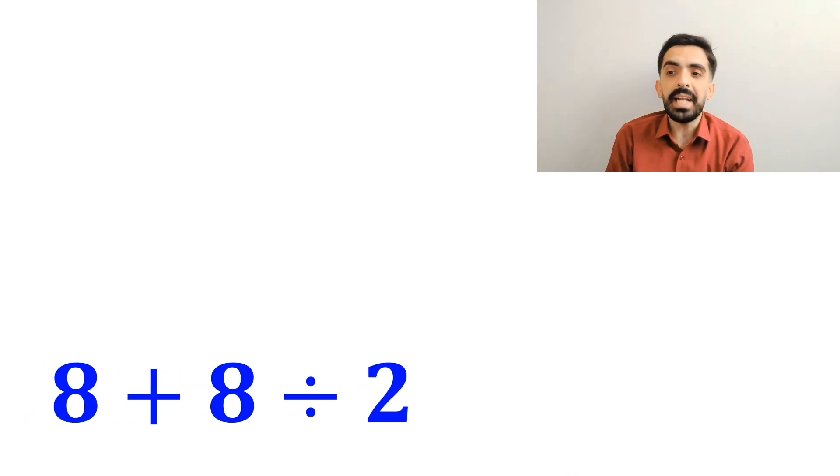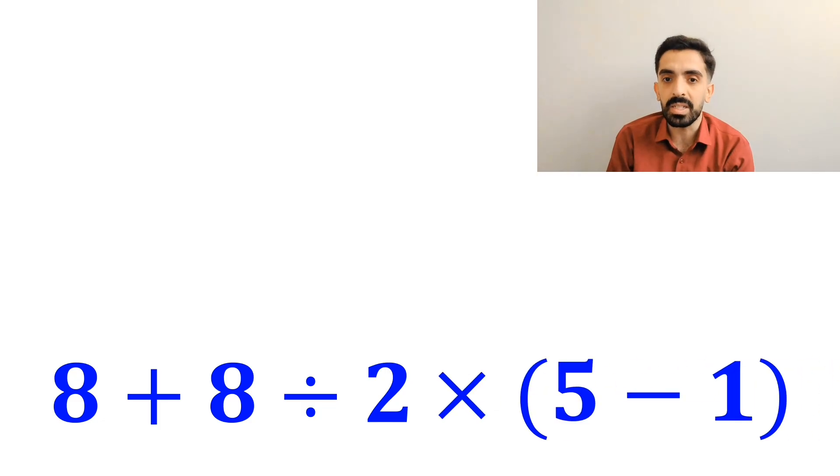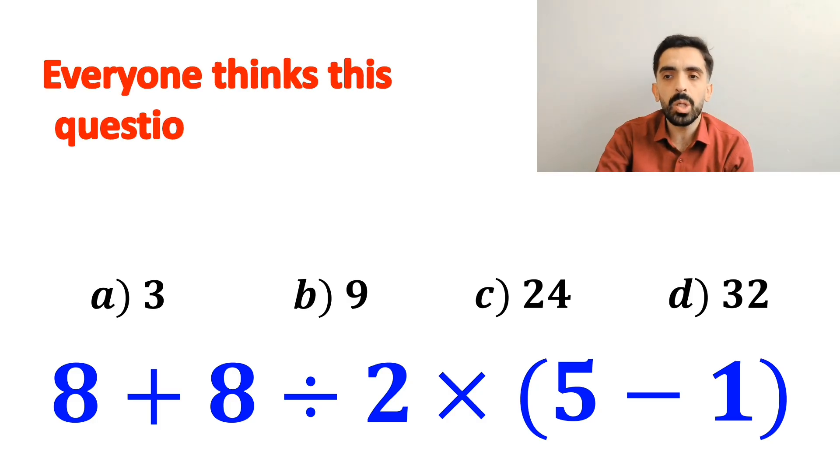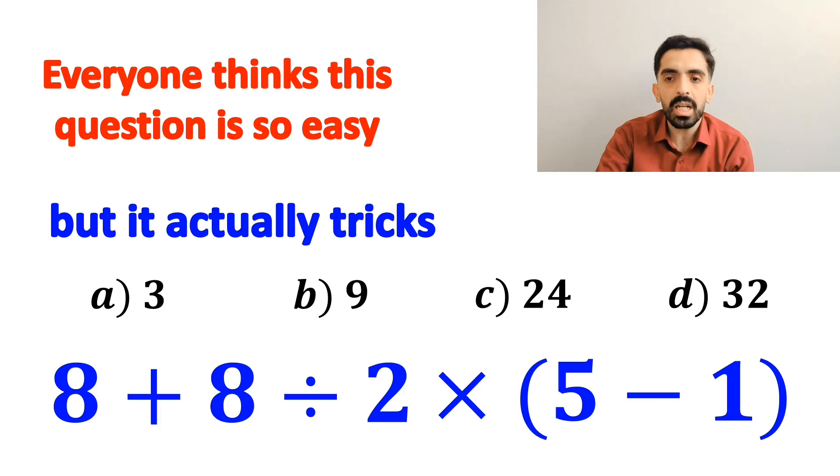What is the value of the expression 8 plus 8 divided by 2 multiplied by open parenthesis 5 minus 1 close parenthesis? Which option do you think is the correct answer to this question? Everyone thinks this question is so easy, but it actually tricks a lot of people.